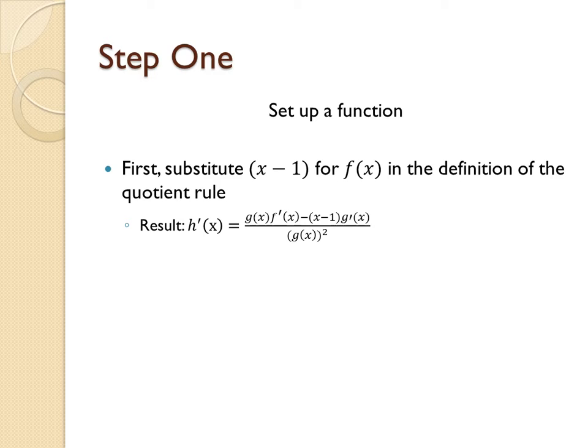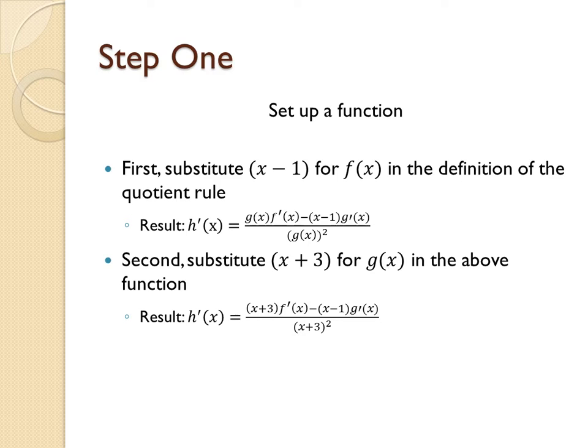So now, let's substitute x plus 3 for g of x in the above function. This results in h prime of x equals x plus 3 times f prime of x minus x minus 1 times g prime of x all over x plus 3 squared.